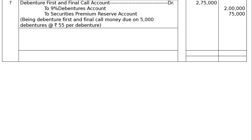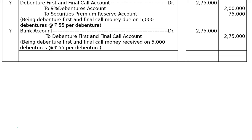Sixth entry is the receipt entry for the final call: Bank Account debited Rs.2,75,000, to Debenture First and Final Call Account Rs.2,75,000. Being debenture first and final call money received on 5,000 debentures at the rate of Rs.55 per debenture. Total of the journal: both debit and credit columns will be Rs.14,00,000 each. This is the final answer.